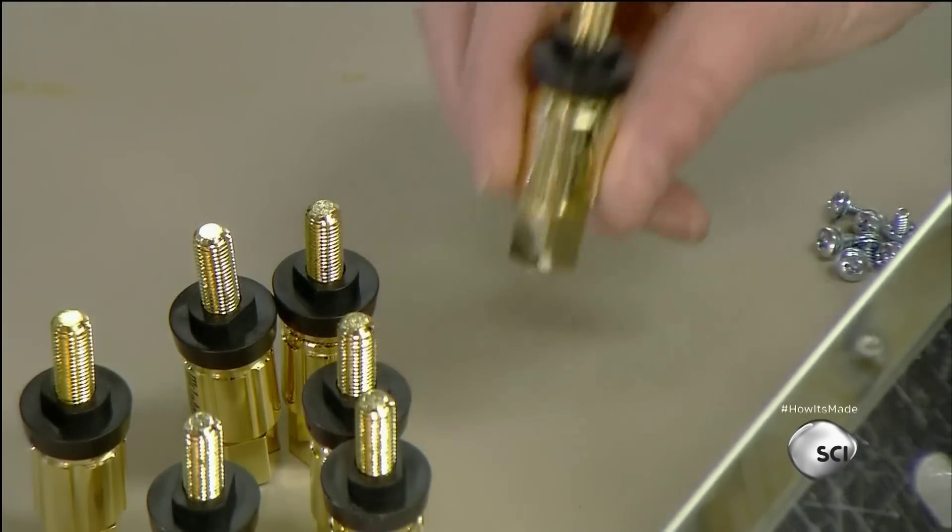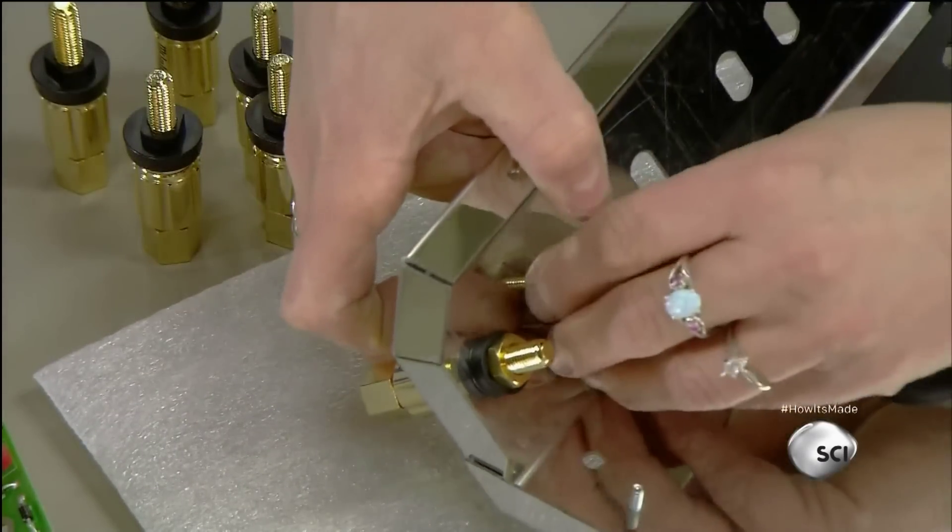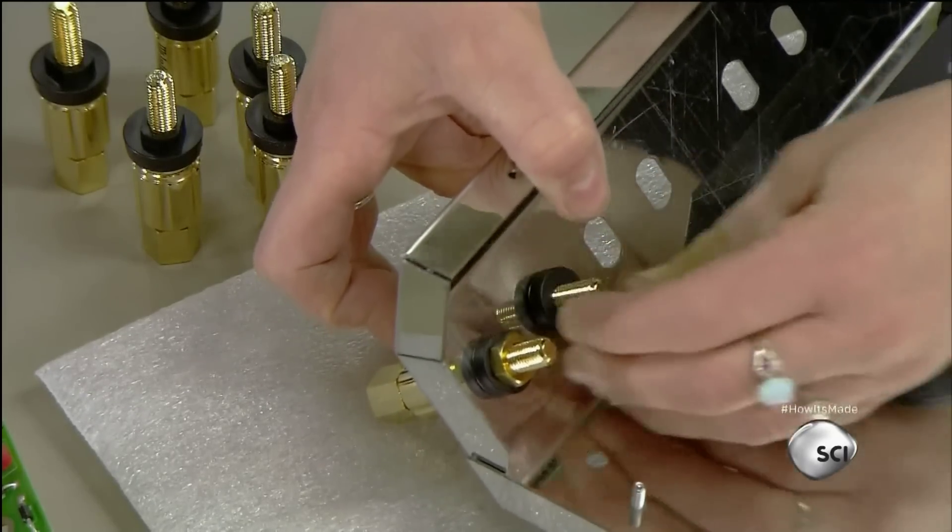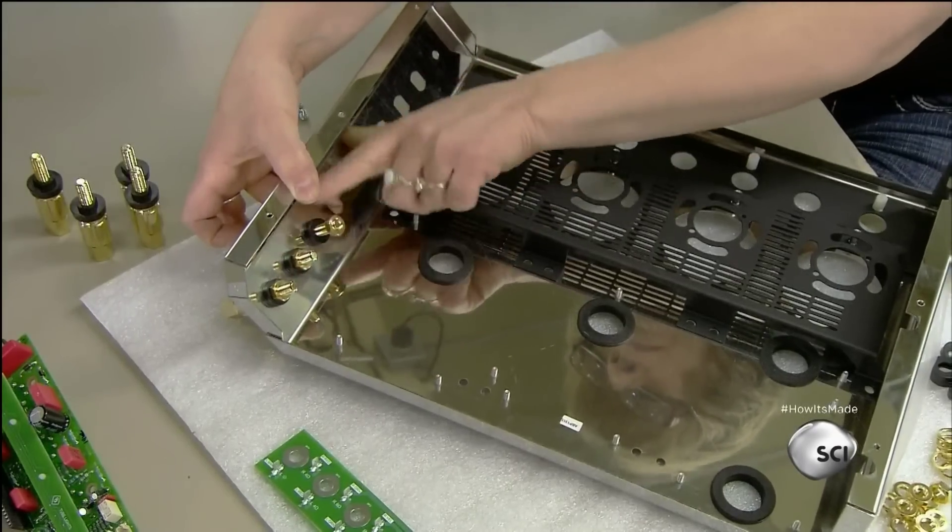Next are the speaker terminals, which connect the speaker wires to the amp. These connectors are made of gold-plated brass, which are non-magnetic metals. Magnetic ones would react to the electric current and cause distortion.